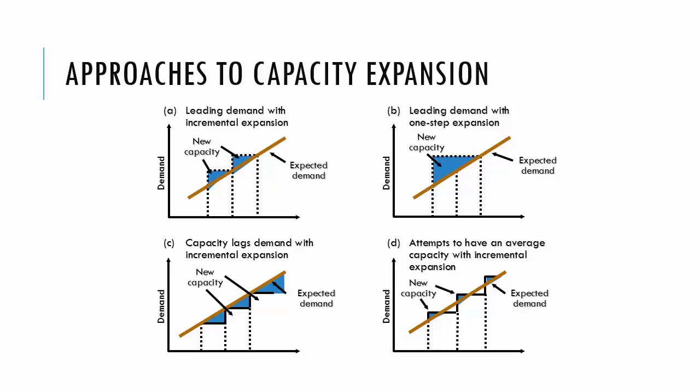Next we have leading demand with one step expansion. A good example of this is building a new wing of a hospital to house the operating room suites and recovery rooms. You cannot easily just add one operating room. You need to do it in a much larger expansion. So a whole wing would be a good idea.